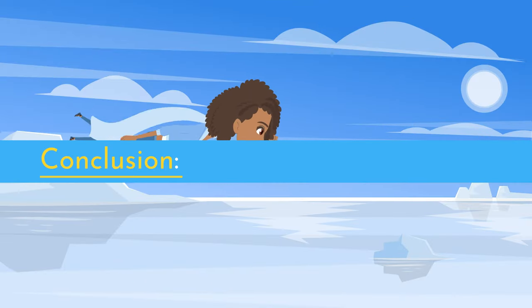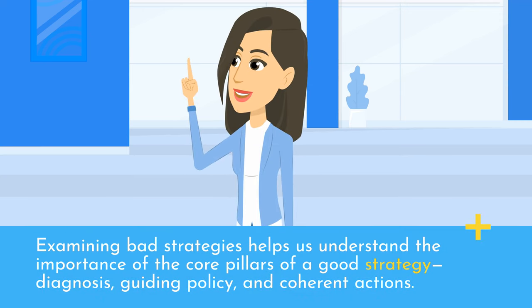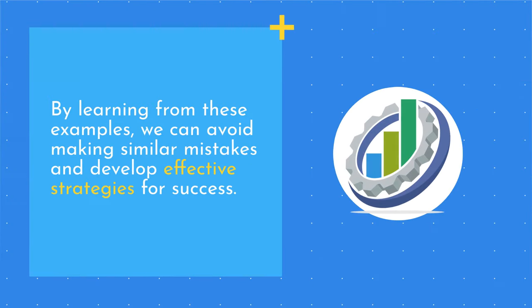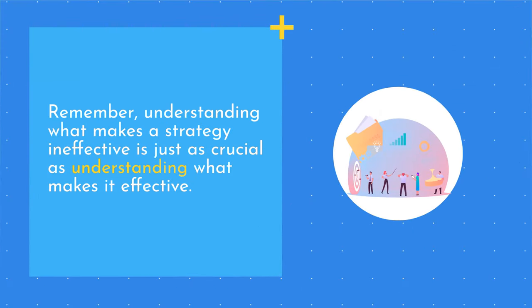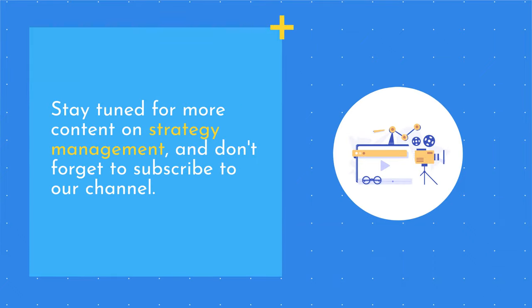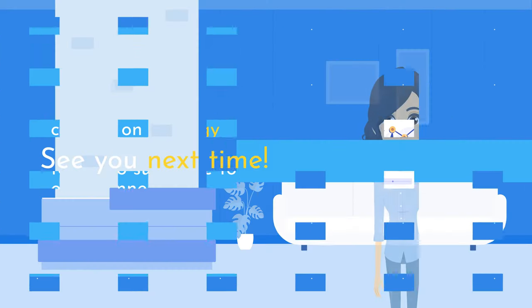Conclusion. Examining bad strategies helps us understand the importance of the core pillars of a good strategy: diagnosis, guiding policy, and coherent actions. By learning from these examples, we can avoid making similar mistakes and develop effective strategies for success. Thank you for joining us in this educational video on business strategy and the identification of bad strategies. Remember, understanding what makes a strategy ineffective is just as crucial as understanding what makes it effective. Stay tuned for more content on strategy management, and don't forget to subscribe to our channel. See you next time!